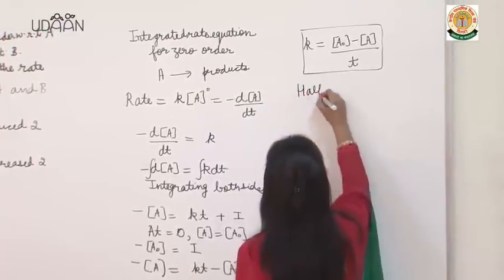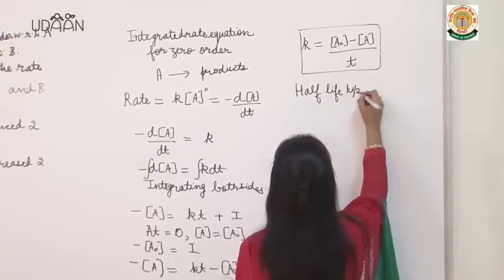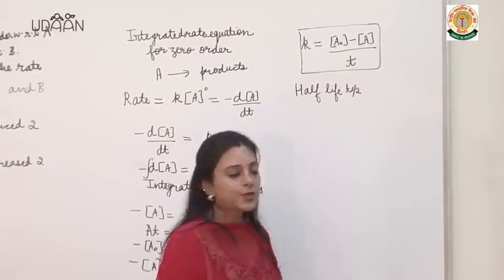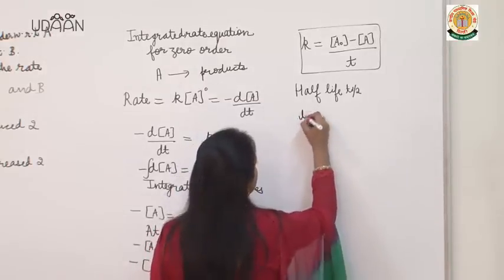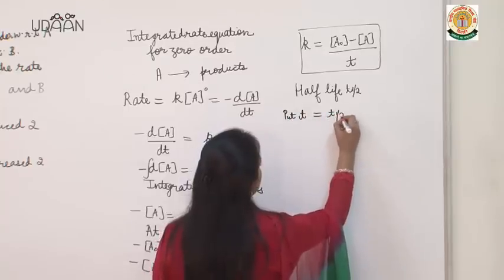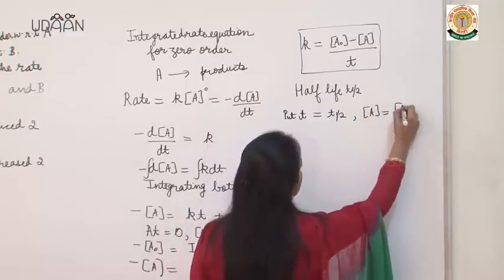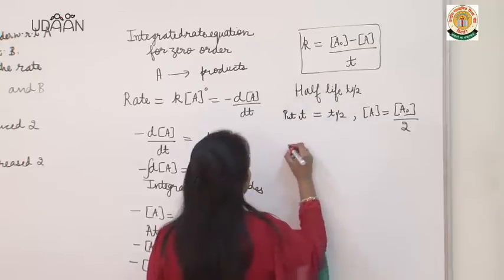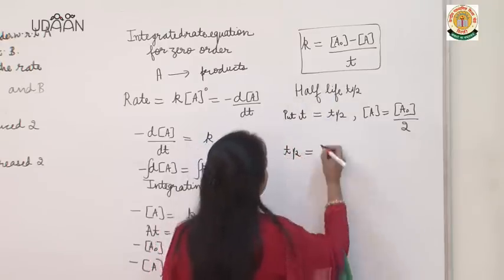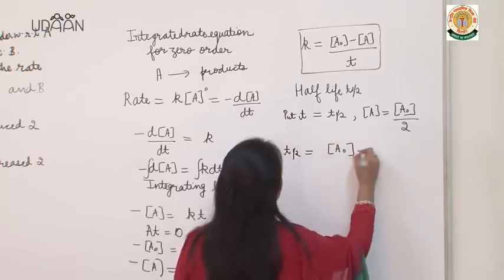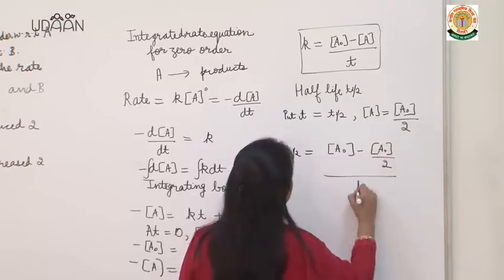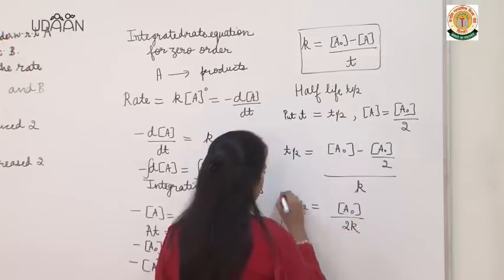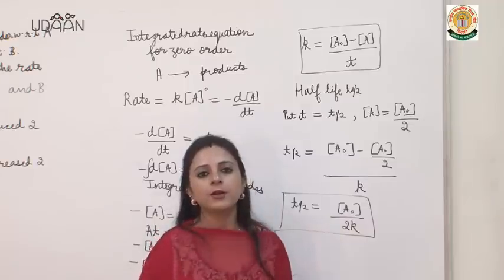Now suppose I want to find the half life for a zero order reaction. Half life means when 50% of the reaction is complete. Put t = t½ and A = A₀/2 (half the reactant has decomposed). Substituting into k = (A₀ − A)/t, we get t½ = (A₀ − A₀/2)/k = A₀/(2k). So the expression for half life of a zero order reaction is t½ = A₀/2k.